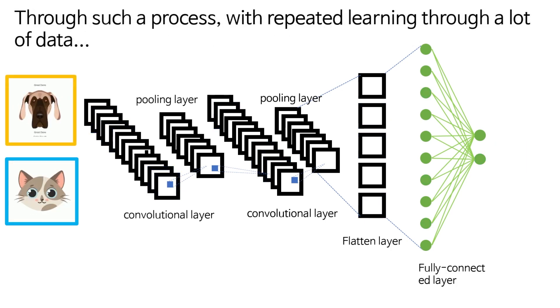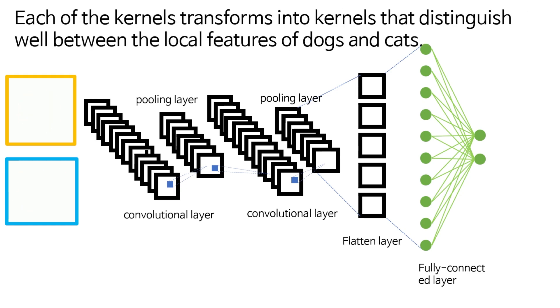Through such a process, with repeated learning through a lot of data, each of the kernels transforms into kernels that distinguish the local features of dogs and cats.